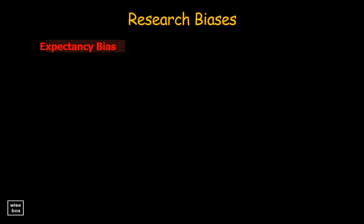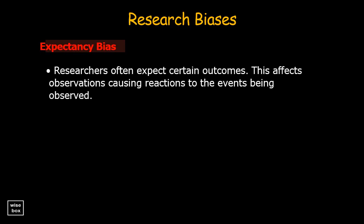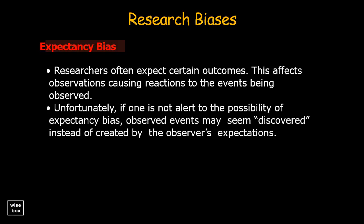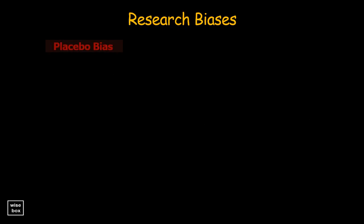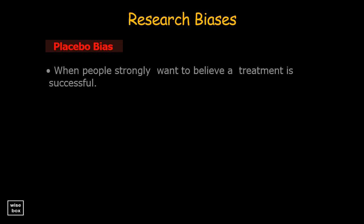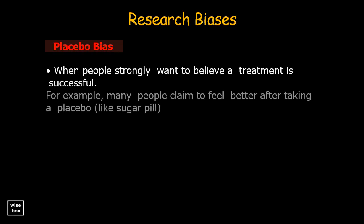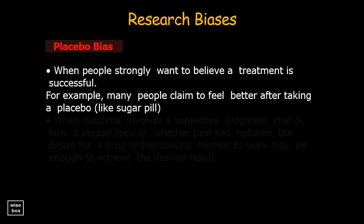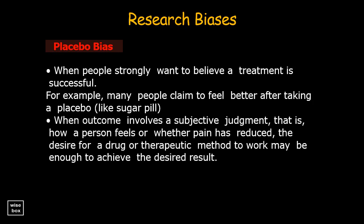Expectancy bias: researchers often expect certain outcomes, and this affects observations by causing reactions to the events being observed. If one is not alert to the possibility of expectancy bias, observed events may seem discovered instead of created by the observer's expectations. Placebo bias occurs when people strongly want to believe a treatment is successful. For example, many people claim to feel better after taking a placebo, like a sugar pill. When the outcome involves a subjective judgment — such as how a person feels or whether pain has reduced — the desire for a drug or therapeutic method to work may be enough to achieve the desired result.